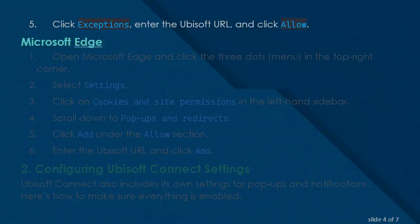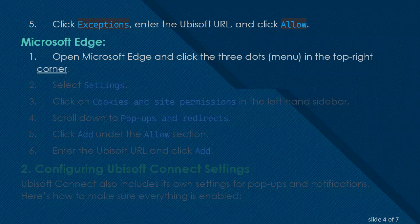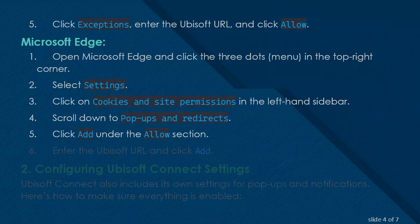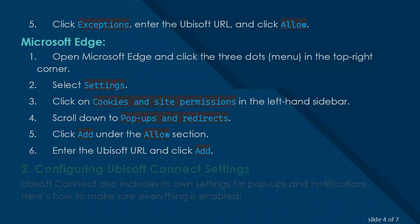Microsoft Edge: Open Microsoft Edge and click the three dots menu in the top right corner. Select Settings and click on Cookies and Site Permissions in the left-hand sidebar. Scroll down to Pop-Ups and Redirects. Click Add under the Allow section, enter the Ubisoft URL, and click Add.